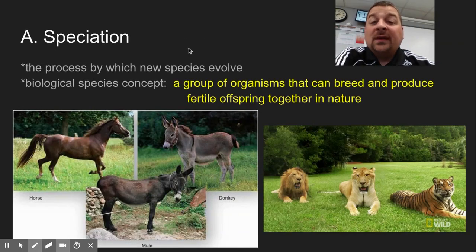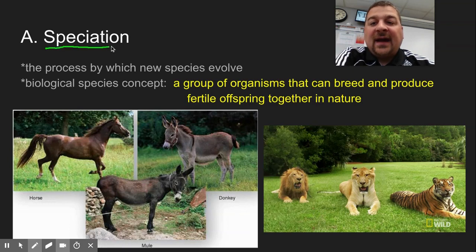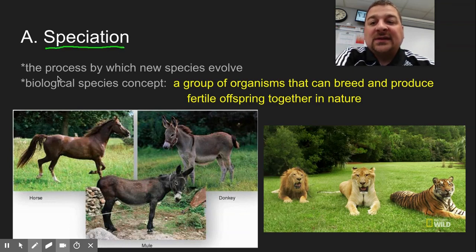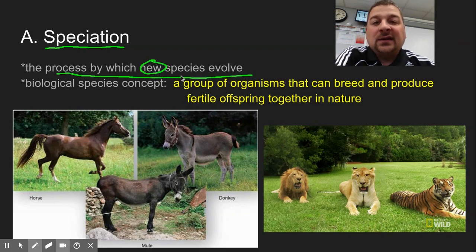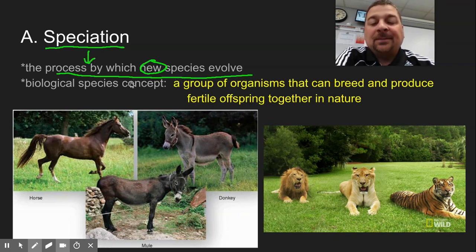One of the first things we have to do is define the process of speciation. Speciation is the process by which new species evolve — how do we get new things on this ball of rock we call Earth? That process is called speciation.